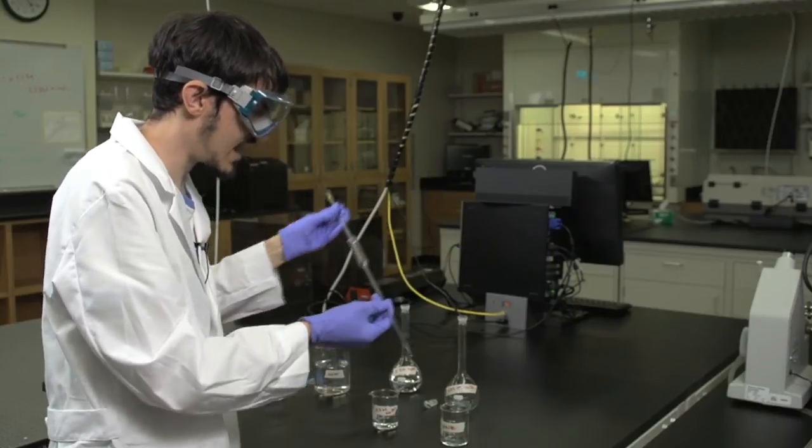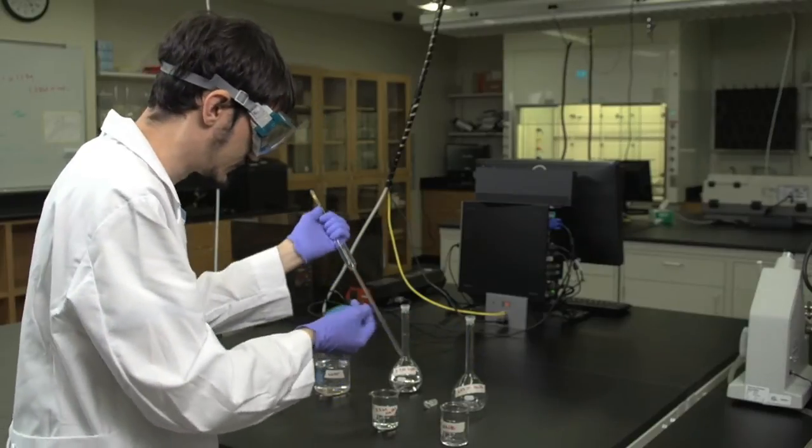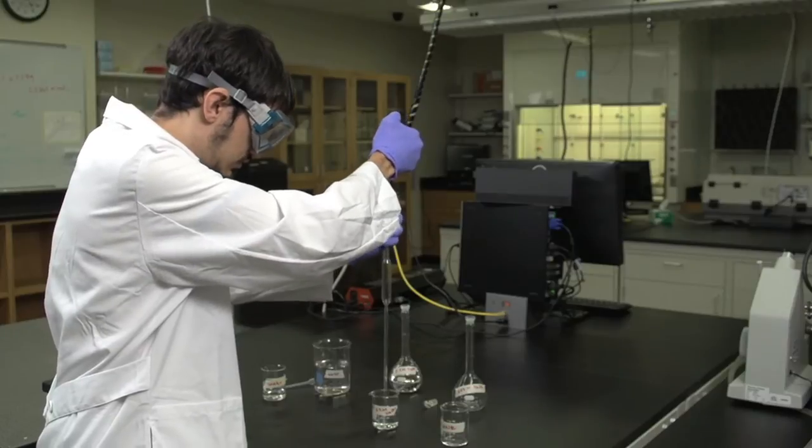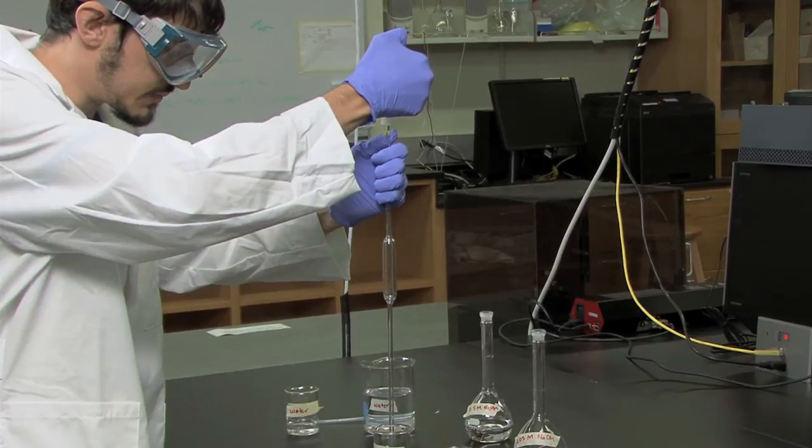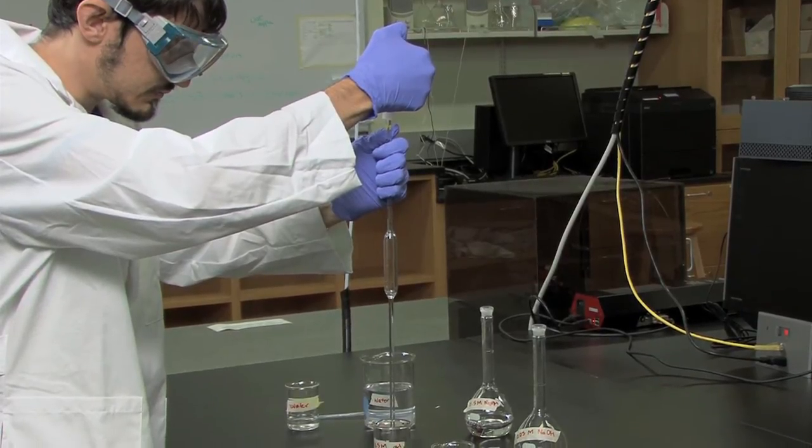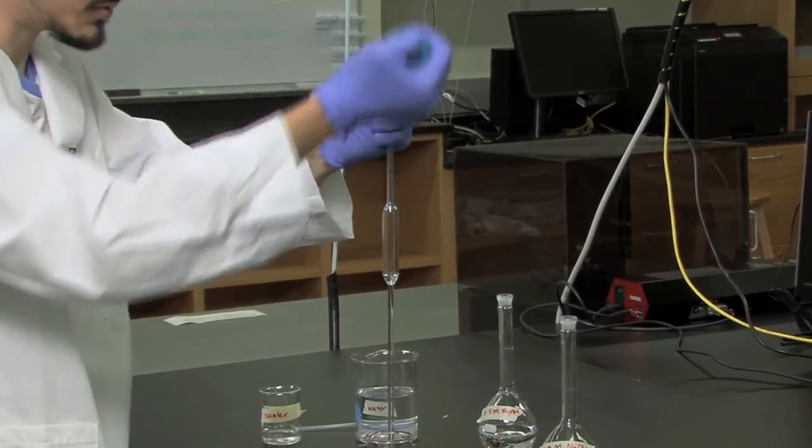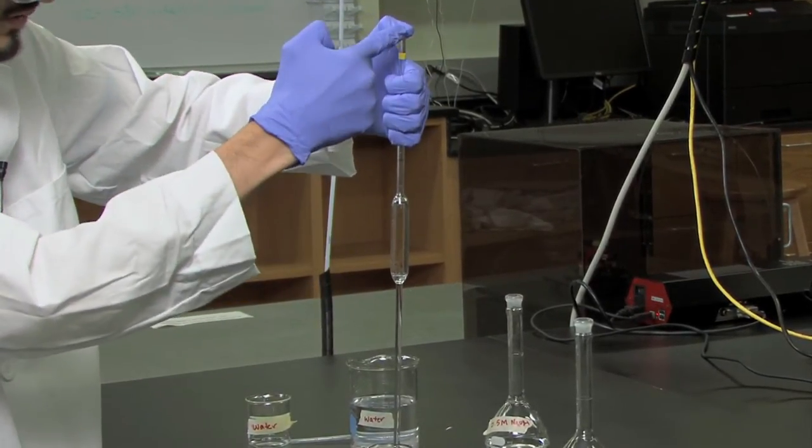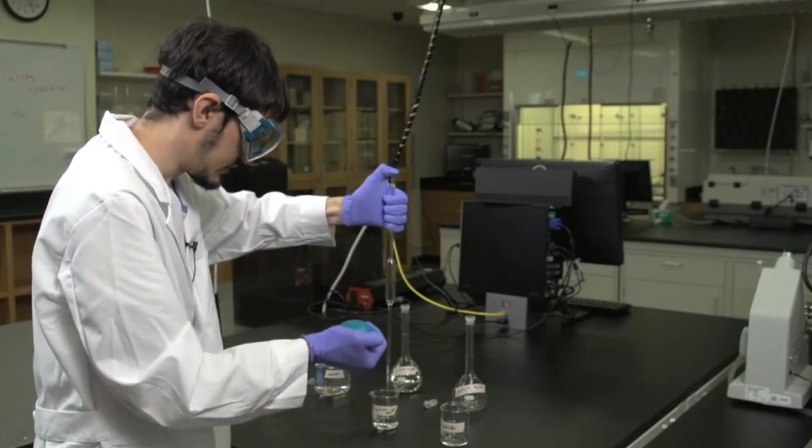Now you are ready to obtain the actual volume that you are going to use to make the diluted solution. Draw up the solution into the volumetric pipette. You may need to have several squeezes to do this, and what you want to do is put your thumb, or one of your fingers, firmly over the top to create a vacuum.